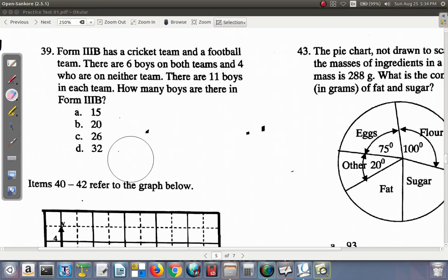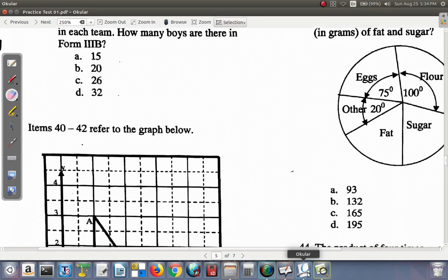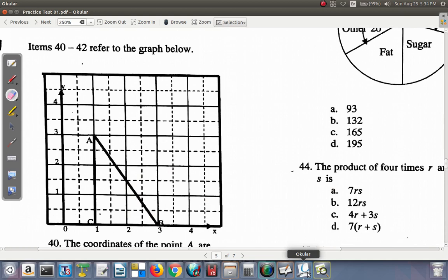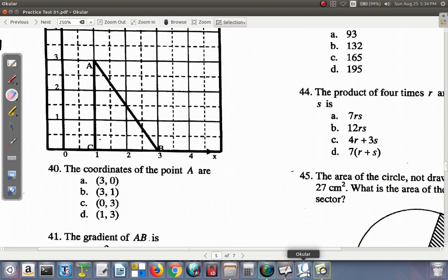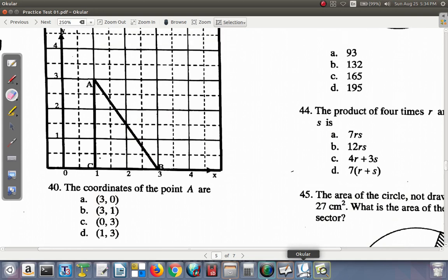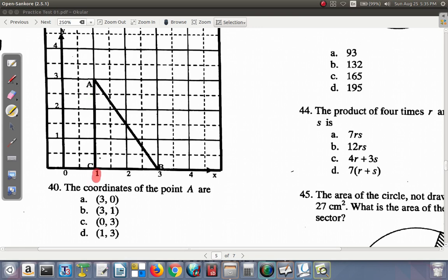Let's move on to question 40. Question 40 to 42 refer to the graph below. Question 40 says the coordinates of the point A are. Point A.